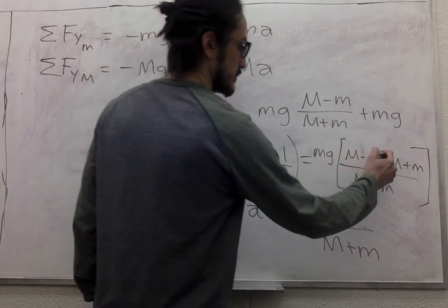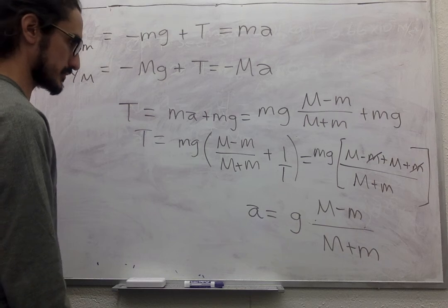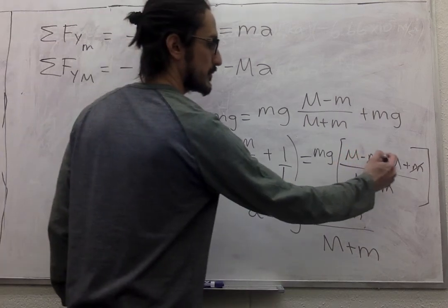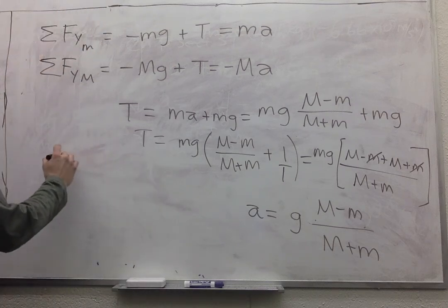So the small mass goes away, and we have two big M's, so over here.